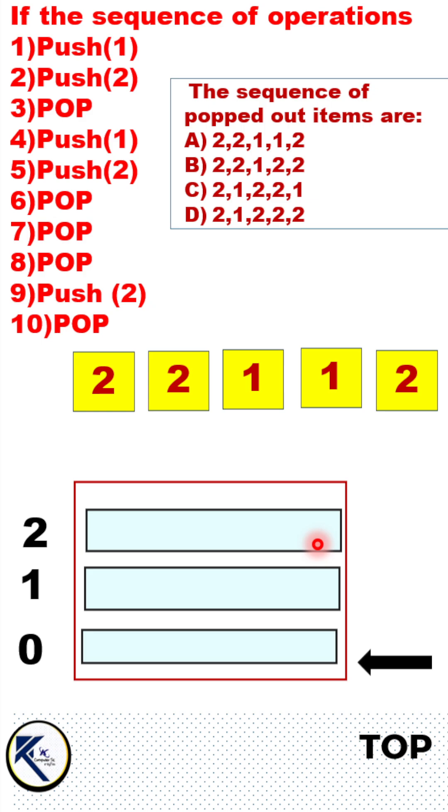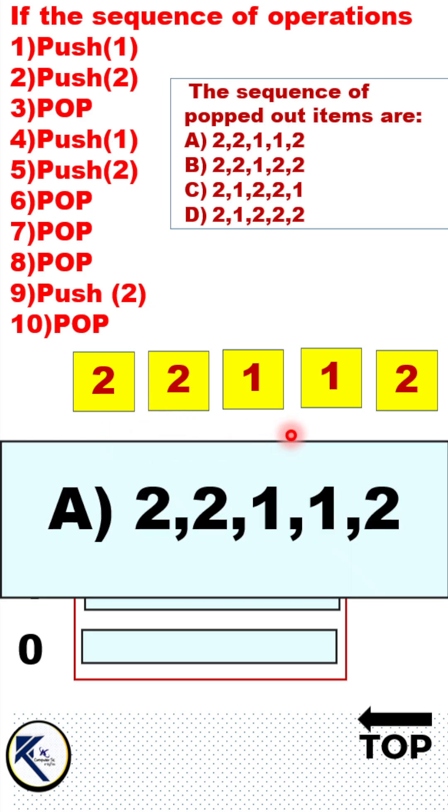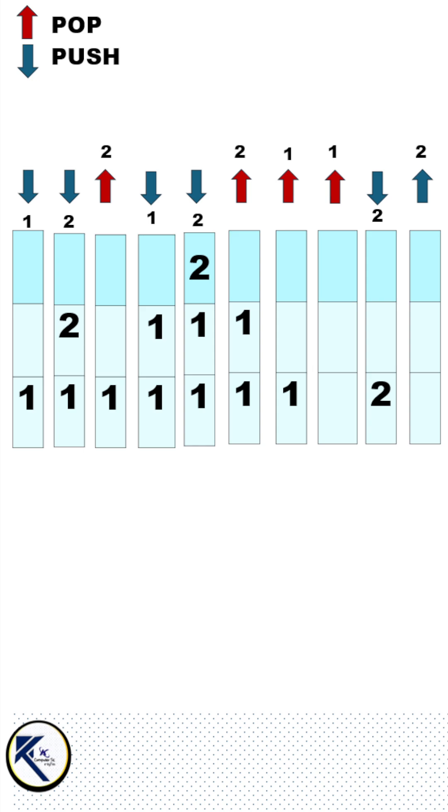So this is the correct sequence of the elements removed from the stack. As per the given set of choices, this answer is the correct choice. This is just a quick recap of the push and pop operations. The red arrows represent the popped out elements.